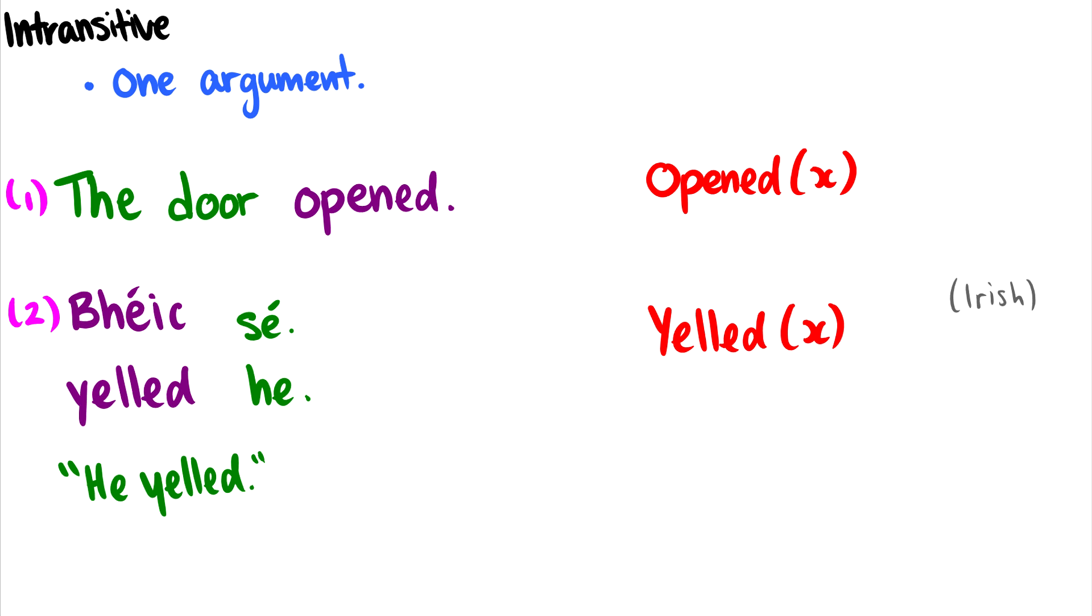Intransitive verbs take one argument. What do I mean by one argument? Well, typically I mean one noun phrase as an argument. The first example is 'the door opened.' Our verb is 'opened' and there is one thing that is opening, and that one thing is the noun phrase 'the door.' We can represent this logically as 'opened(x)', which means there's some variable that is opened. In this case we could replace x with 'the door.'